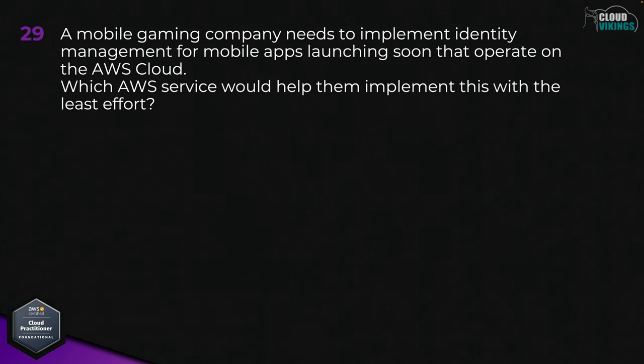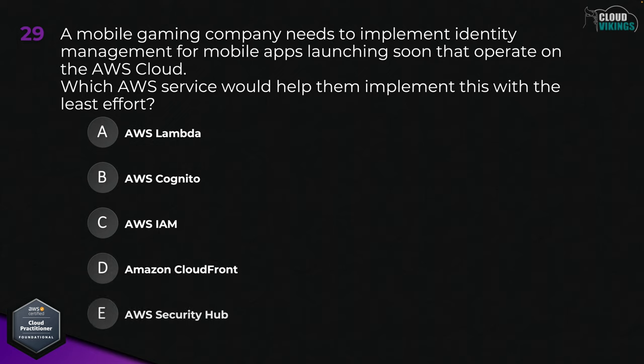Question twenty-nine: a mobile gaming company needs to implement identity management for mobile apps launching soon that operate on the AWS cloud. Which AWS service would help them implement this with the least effort? Options are: A, AWS Lambda; B, AWS Cognito; C, AWS IAM; D, Amazon CloudFront; or E, AWS Security Hub. The correct answer would be B, AWS Cognito.